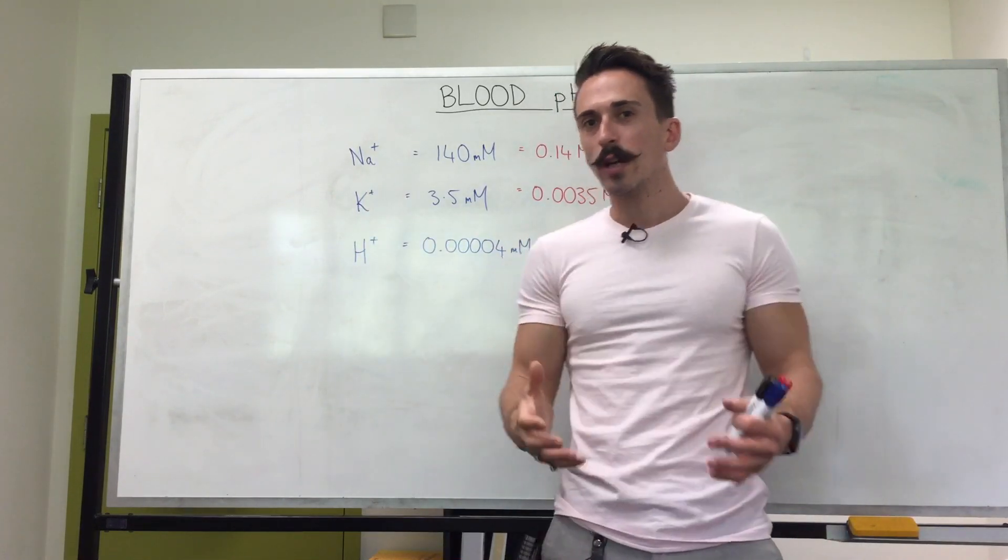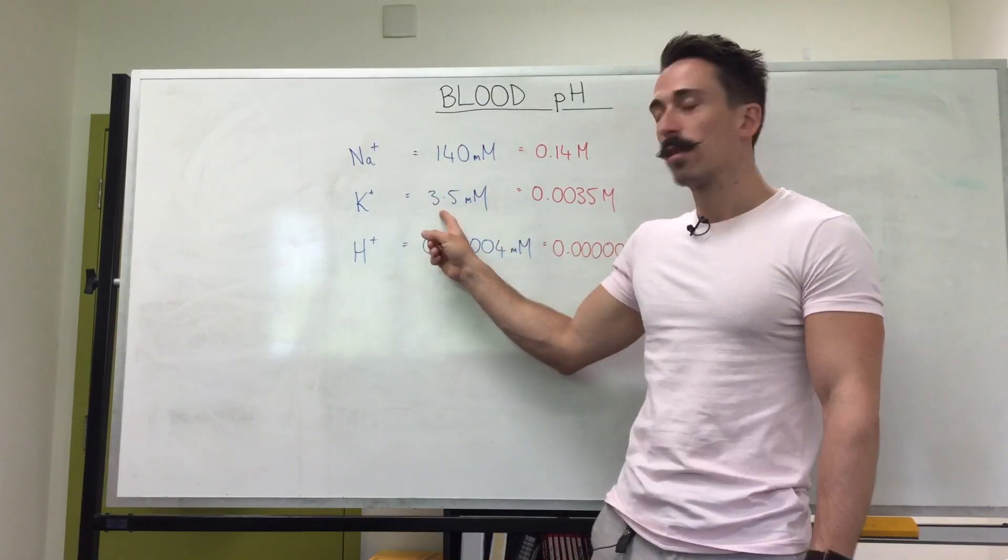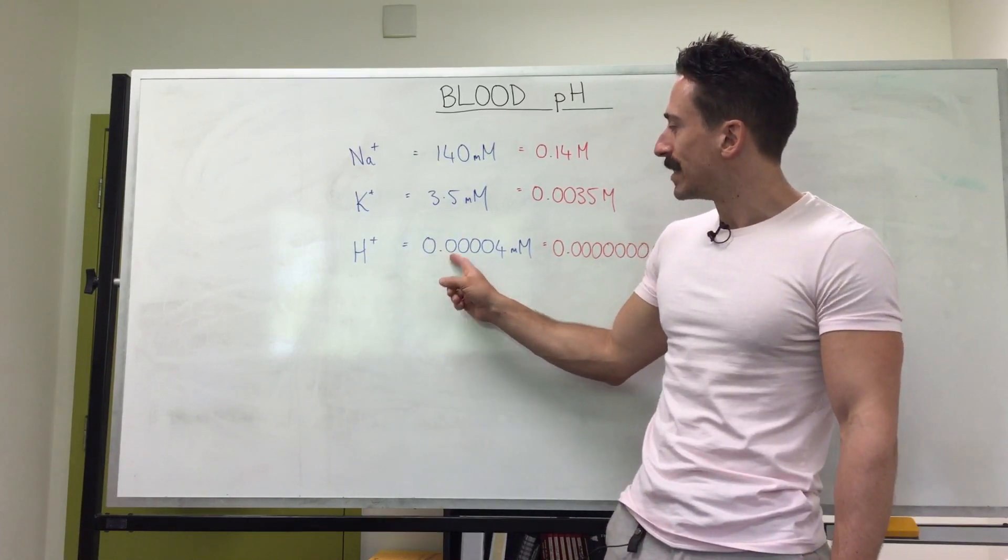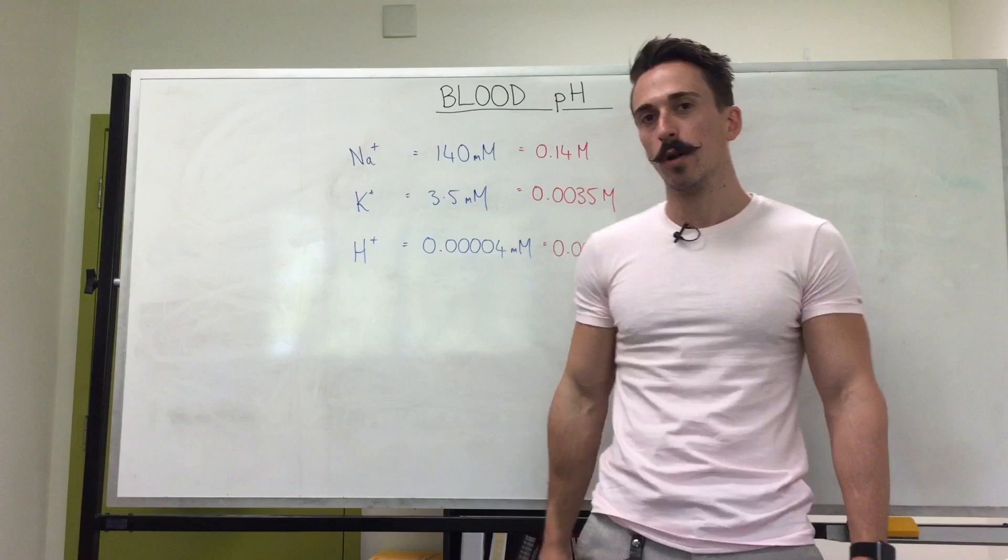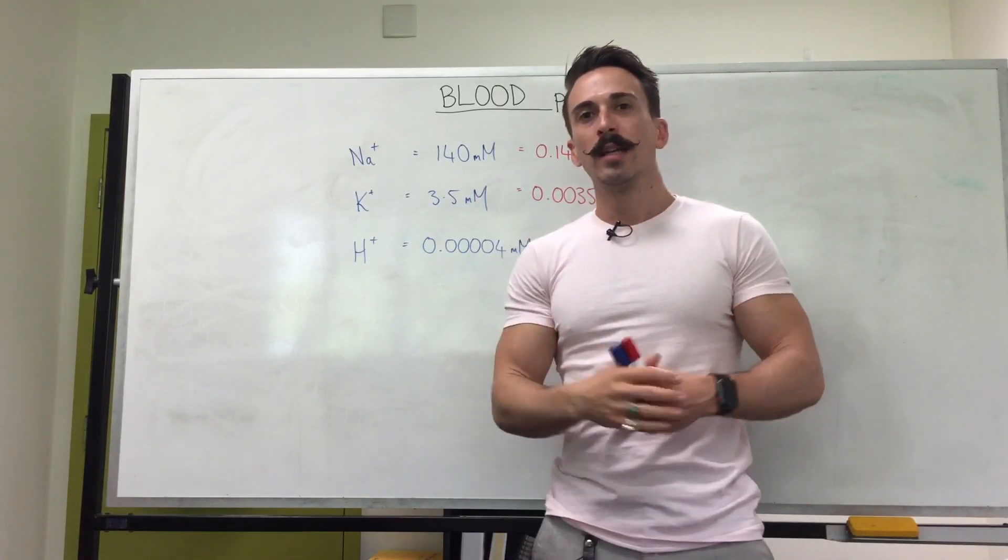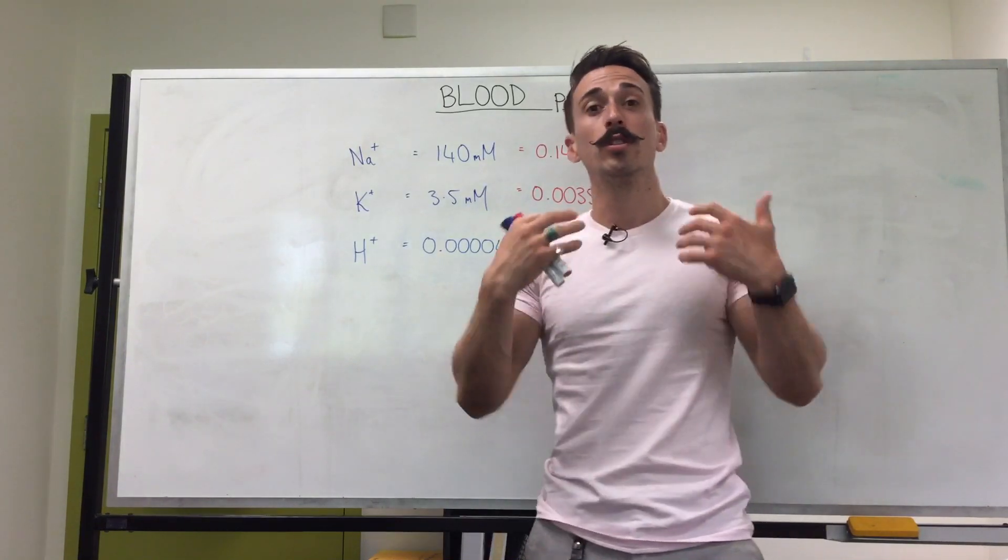And the concentration within the blood is around about for sodium 140 millimolar, for potassium around 3.5 millimolar and for hydrogen it's around about 0.00004 millimolar. Now don't worry too much about the unit, it's just another measurement such as microliters or millimeters for example, it's just a unit of concentration.